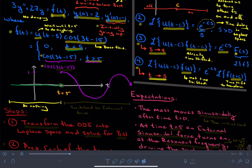Then at 5 seconds, this cosine of 3t minus 15, which is another way of saying cosine of 3 times (t minus 5), is turned on.